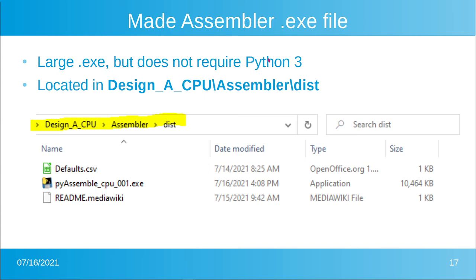Another nice addition: there is now an assembler executable so you don't need Python 3 installed anymore. If you've been discouraged by having to install Python 3, there's now a Windows executable — it's about 10 megabytes, which is just what the executable-maker program produces. It's located in the assembly folder under a subfolder called dist, named pi_assemble_cpu_001.exe. For Linux or other platforms, you'll need to build it yourself.